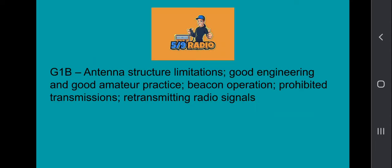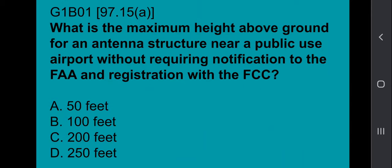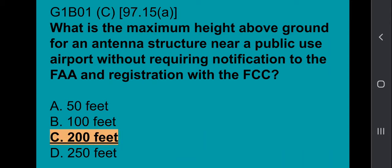G1B covers antenna structure limitations, good engineering and good amateur practice, beacon operation, prohibited transmissions, and retransmitting radio signals. G1B01: What is the maximum height above ground for an antenna structure near a public-use airport without requiring notification to the FAA and registration with the FCC? The correct answer is 200 feet.